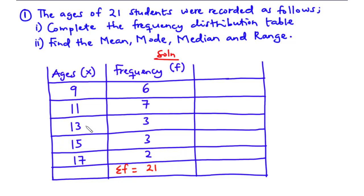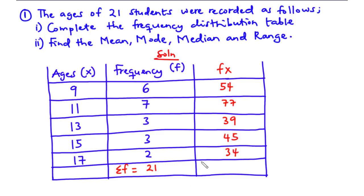We have one column for the ages of students and one for the frequency. The third column is going to be occupied by fx, which is basically f times x — we multiply the age by the corresponding frequency. So we have 9 times 6 which is 54, 11 times 7 which is 77, 13 by 3 is 39, 15 by 3 is 45, and 17 by 2 is 34. The sum of all these values, the summation of fx, is 249. We've now completed the frequency distribution table.